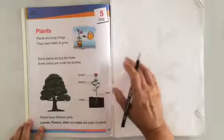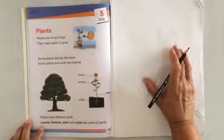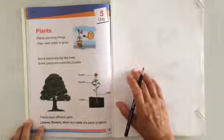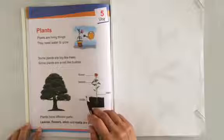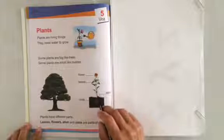We see many types of plants around us. Some plants are big like a tree, and some plants are small like bushes.